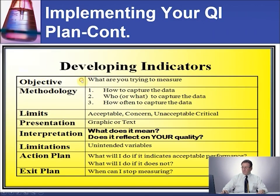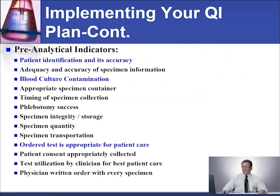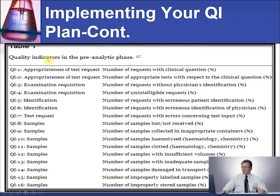To develop and implement indicators, first you need to select the indicator — the type of indicator, either pre-analytical, analytical, or post-analytical, which are usually process or outcome indicators. Some examples of pre-analytical indicators you might want to consider in your laboratory: patient identification and its accuracy, blood culture contamination, order and test appropriateness for patient care, or rejected samples.